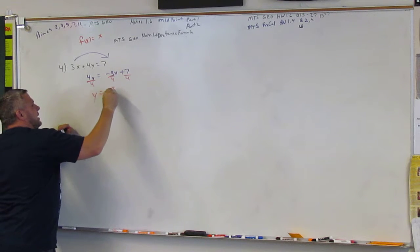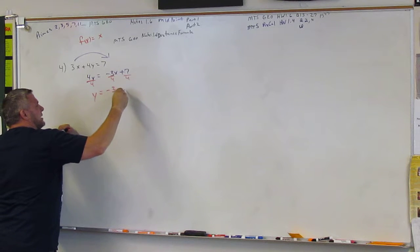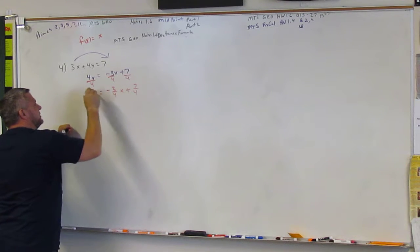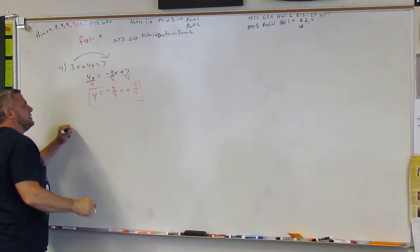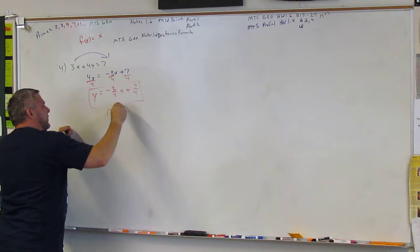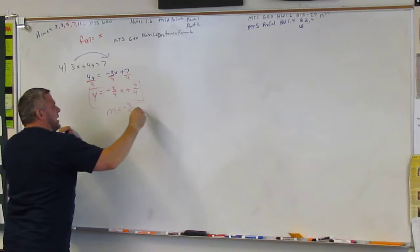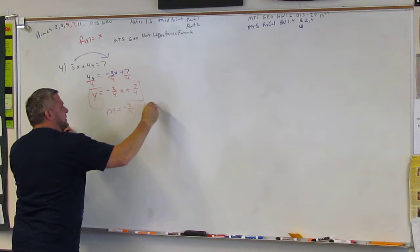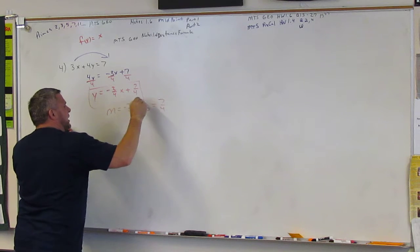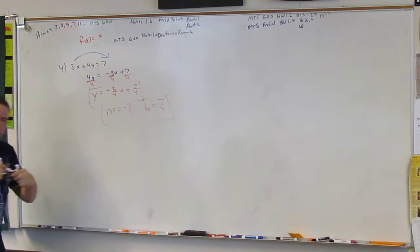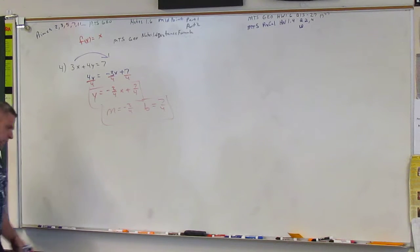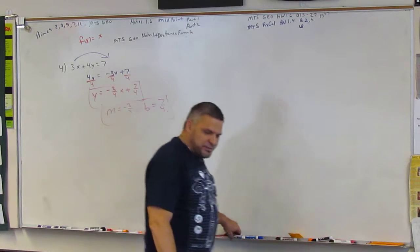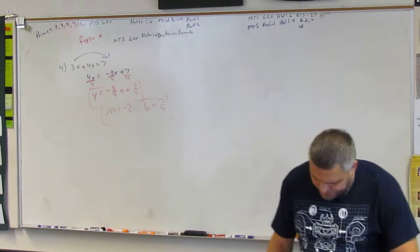Alright. So then, negative three-fourths x plus seven-fourths. Okay? So what is my slope? My slope is negative three-fourths, and my y-intercept is equal to seven-fourths. And I would like to see it as m and b. Alright? We're big boys and girls now. Let's do this. Alright. Next. Six.